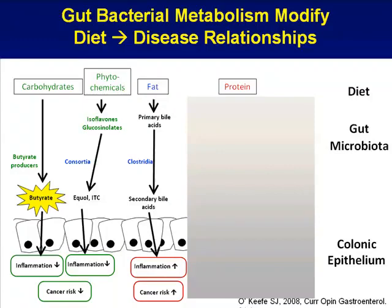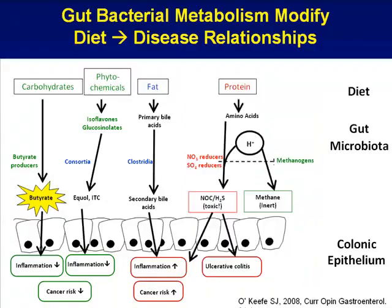On the flip side, there are a number of dietary constituents concerning from an increased cancer standpoint. Fat resulting in increased output of primary bile acids from the gallbladder can be acted on by Clostridia and other organisms to produce secondary bile acids, which have inflammatory properties. Protein and amino acid degradation — particularly sulfur-containing amino acids — produces hydrogen sulfide, which has been shown in experimental models to have inflammatory effects and contribute directly to ulcerative colitis.